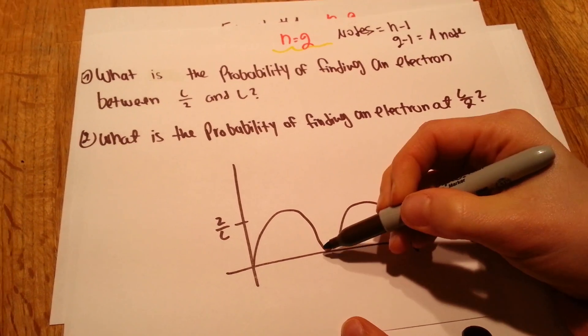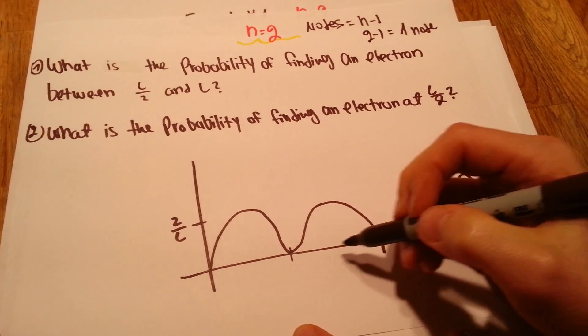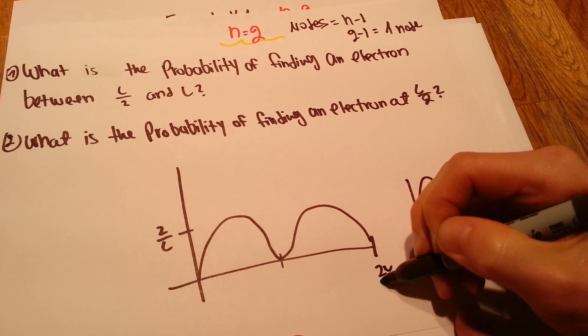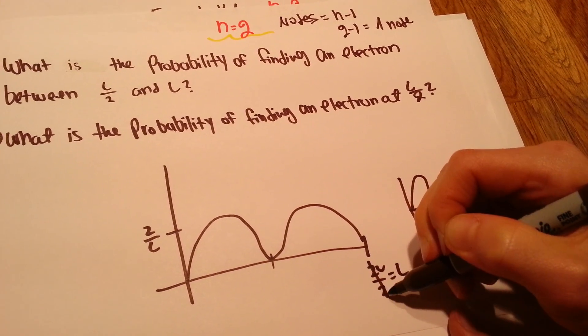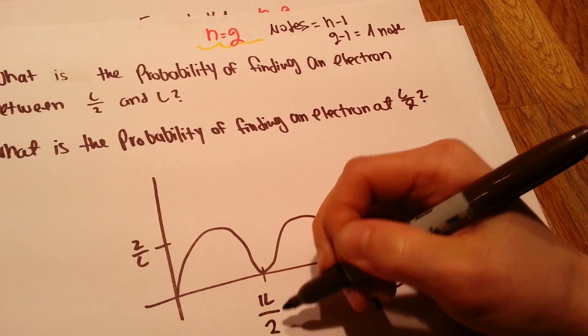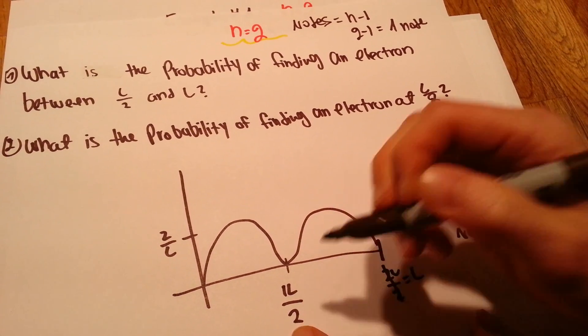So with n equals 2, we have 2 nodes. And our node is going to be right in the middle. So if that's 2, 2L over 2, meaning that's L. If that's 2 over 2, then half of this is 1L over 2. So our node is at 1L over 2.